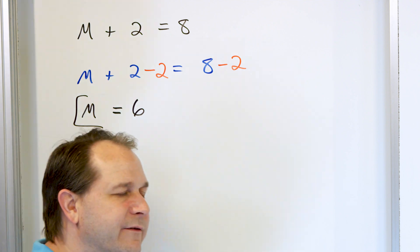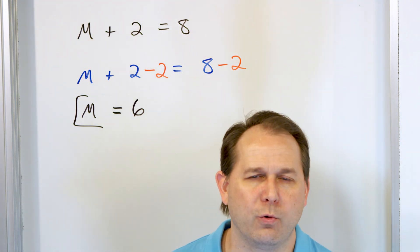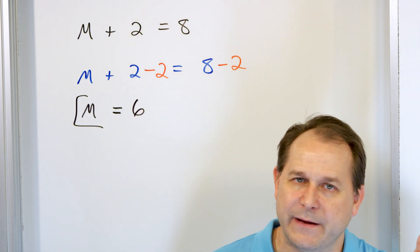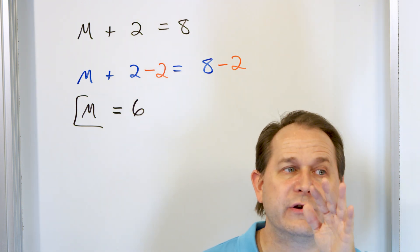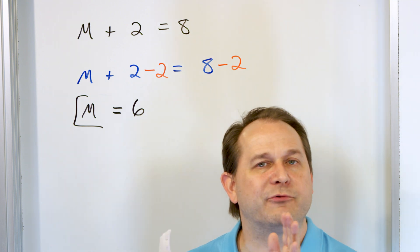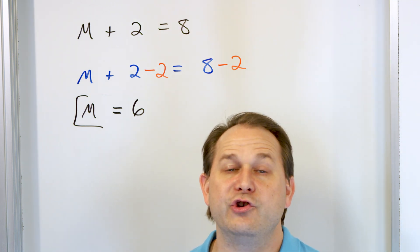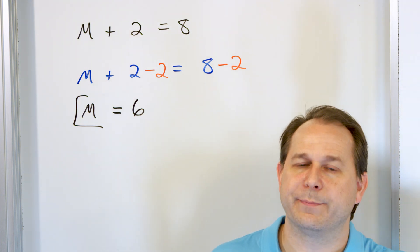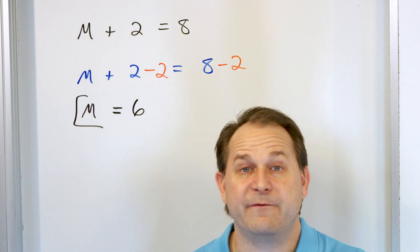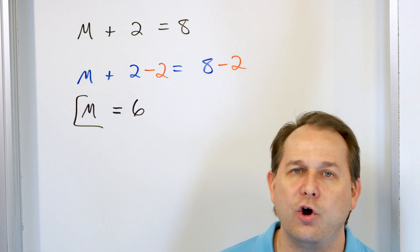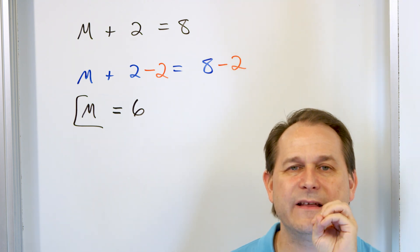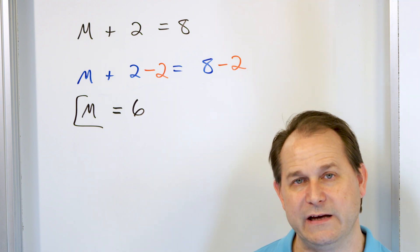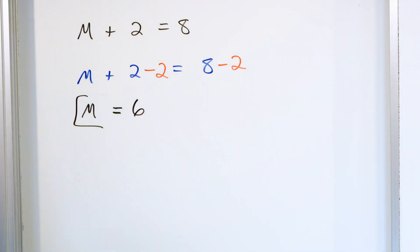We knew ahead of time the answer had to be 6, but now we've shown through a series of steps that this is the right answer. The goal of solving an equation is to find the value of the variable — the unknown variable — the value that makes the equation work. When you get the answer, always put it back in and check it. If M is 6, 6 plus 2 is 8. Yes, it checks. When you get an answer to an equation, you will always be able to check it to see if it's right.